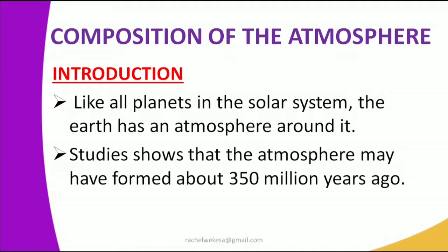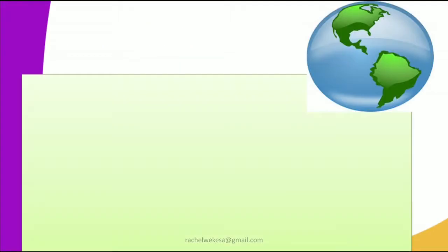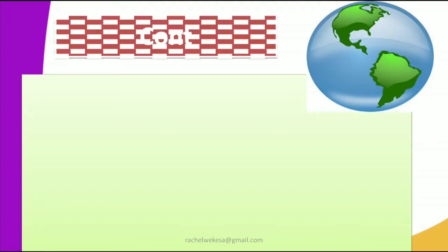Studies show that some of the atmosphere may have been formed about 350 million years ago — long before anybody was born. The Earth existed from the theory part of creation, where God created and placed human beings, plants, seas, and oceans. So the atmosphere existed 350 million years ago.